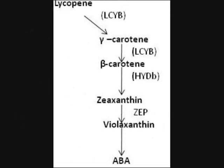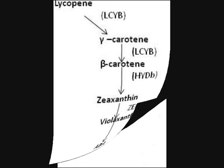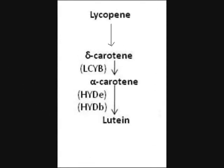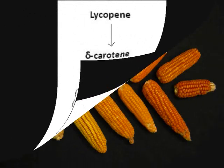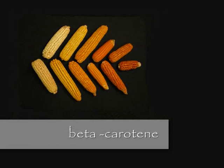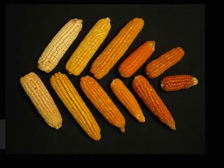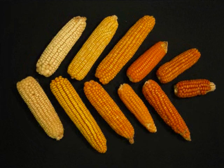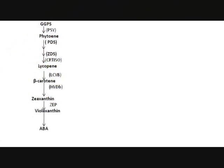The beta-carotene is further synthesized to form abscisic acid, and alpha-carotene forms lutein. In this assignment, our major aim is to increase the beta-carotene content. So, if we alter the LCYE gene, the flow of the pathway is maintained to form beta-carotene.